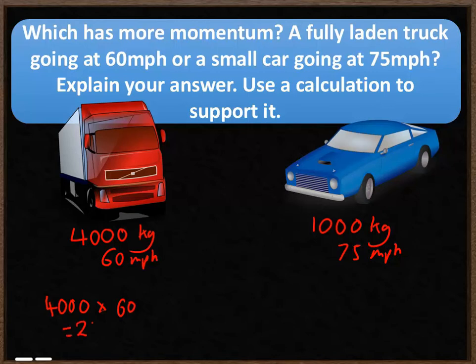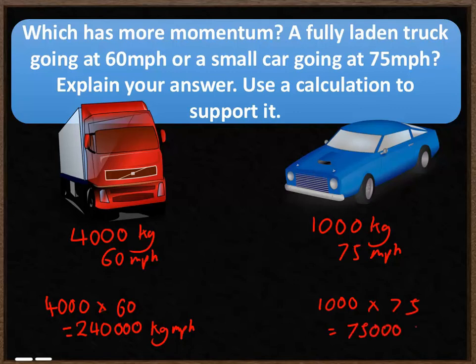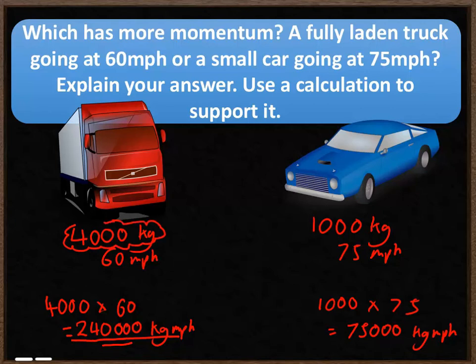The small car's momentum is 1,000 times 75, which equals 75,000 kilogram miles per hour. The truck has significantly more momentum — 240,000 compared to 75,000 — because its mass is four times larger than the car's. This outweighs the fact that the car is travelling 15 miles per hour faster.